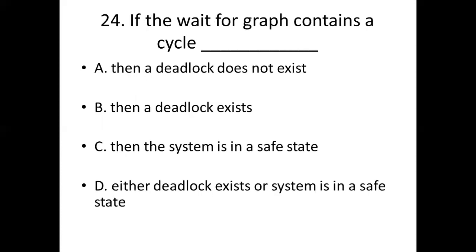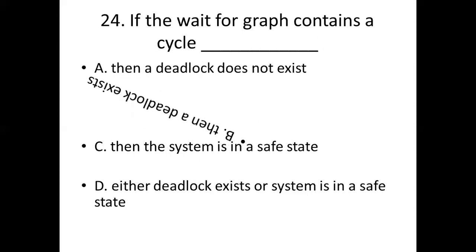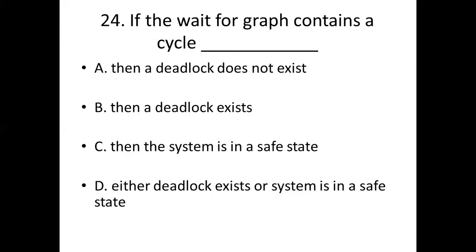Twenty-fourth bit. If the wait-for graph contains a cycle, dash. Option A: Then a deadlock does not exist. Option B: Then a deadlock exists. Option C: Then the system is in a safe state. Option D: Either deadlock exists or the system is in a safe state. Answer: Option B, then a deadlock exists.